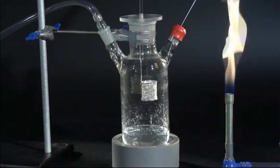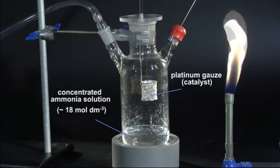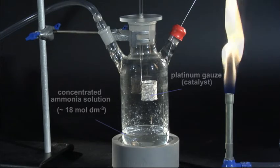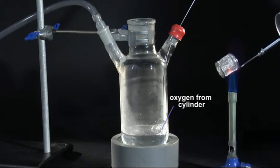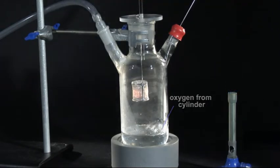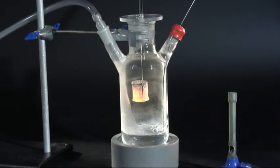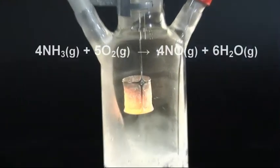In this demonstration, oxygen is gently bubbled through concentrated ammonia solution to provide a mixed atmosphere of the two gases. The warmed platinum gauze soon glows yellow-hot as the exothermic reaction raises the temperature of the surface.